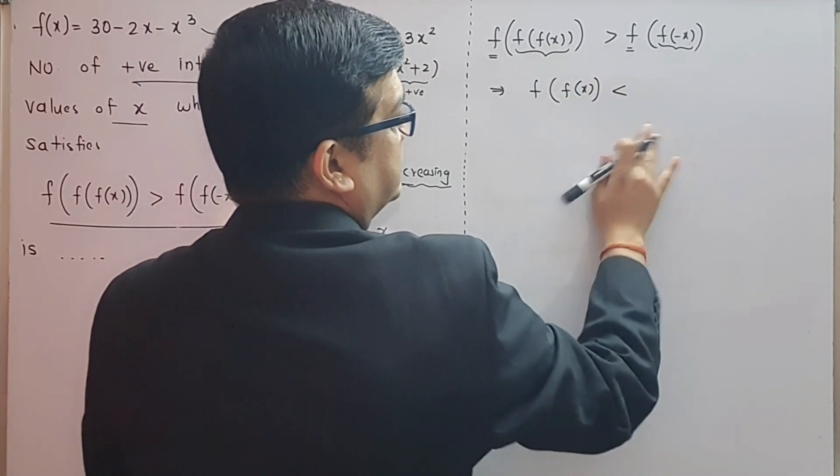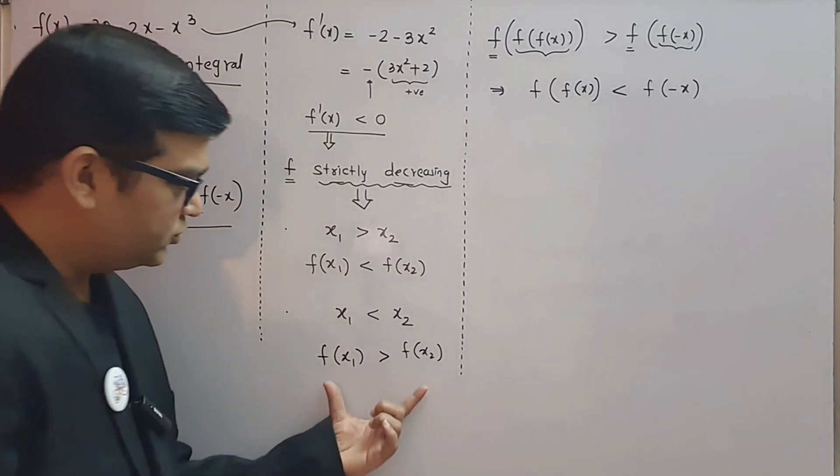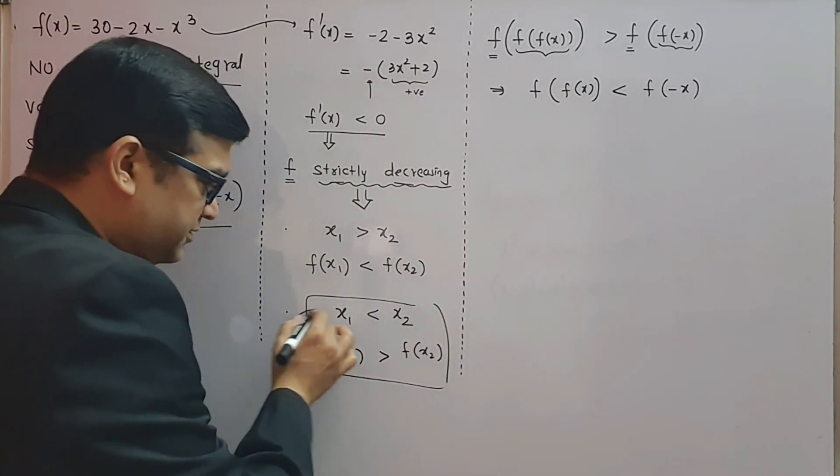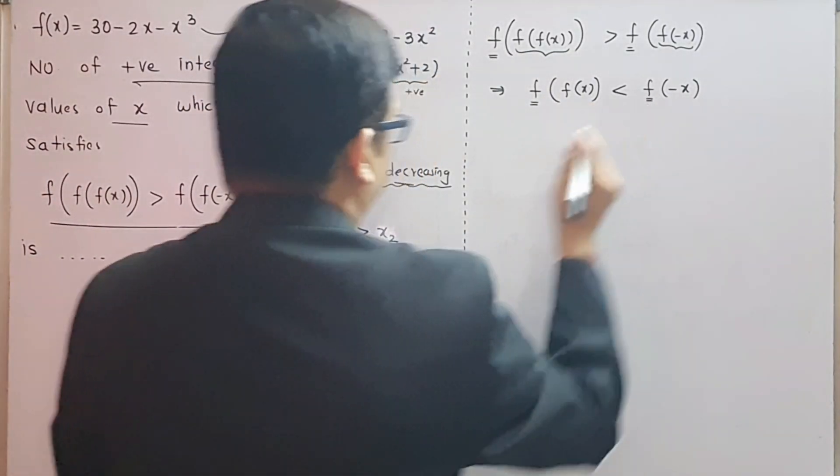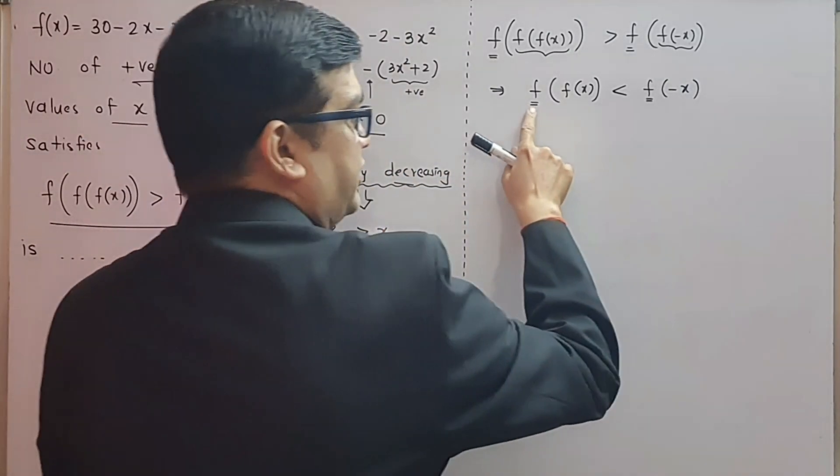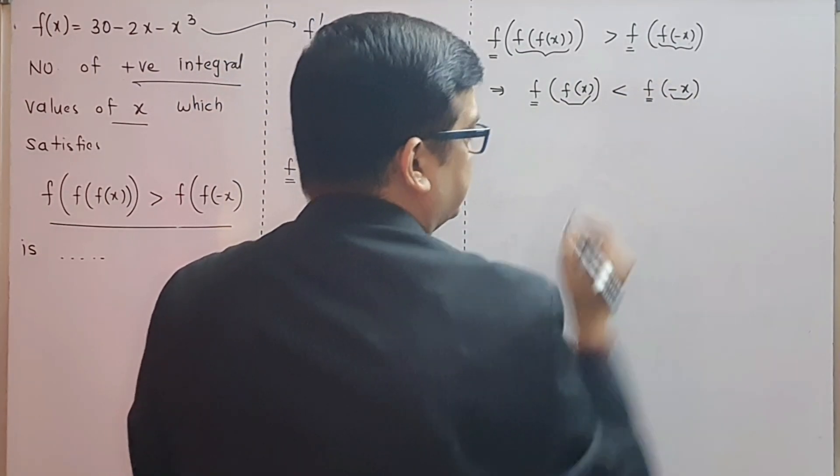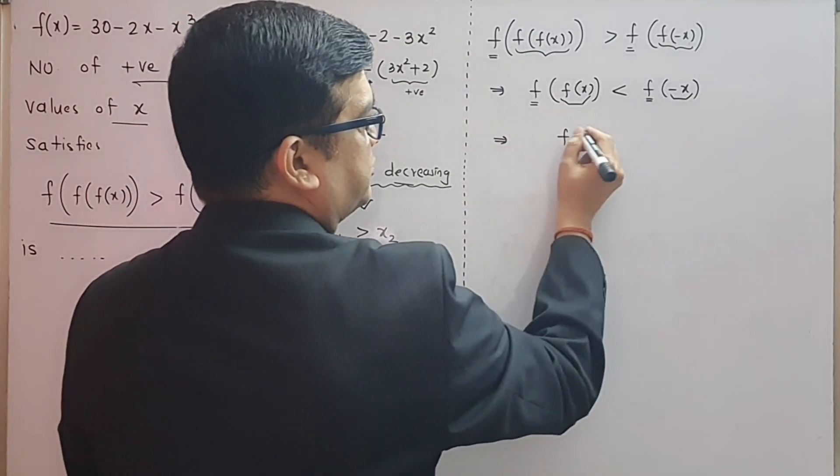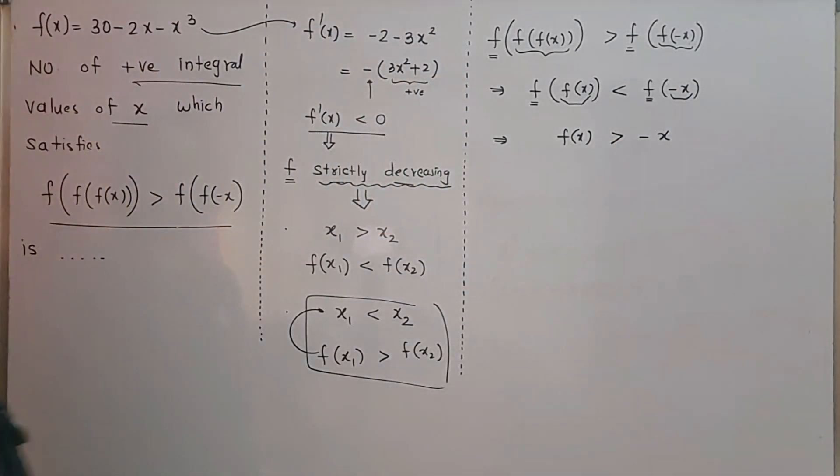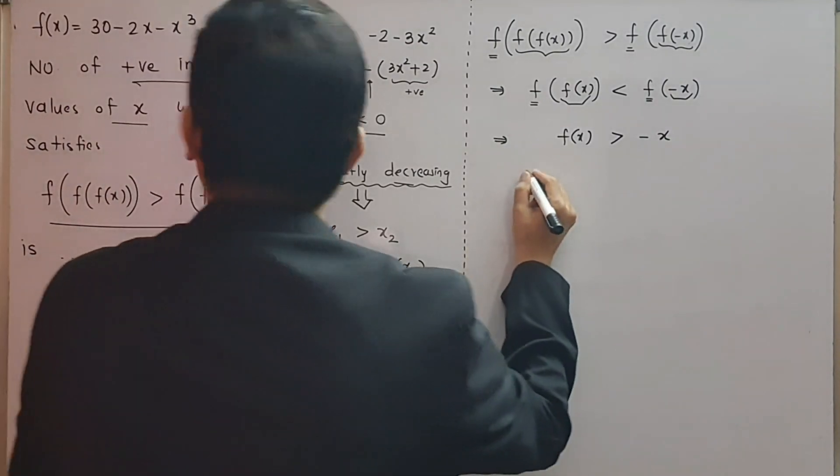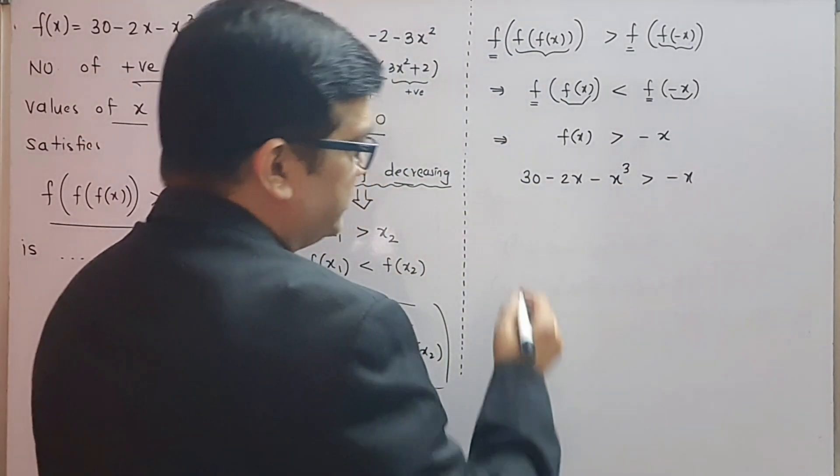If the function is strictly decreasing, look at this input: value of function at this input is greater than value of function at that input. This implies the first input f(f(x)) will be lesser than the second input, f of this second input. This second input f(-x) will be greater than this input -x. And what is f(x)? It is given to be 30 - 2x - x³ greater than -x.